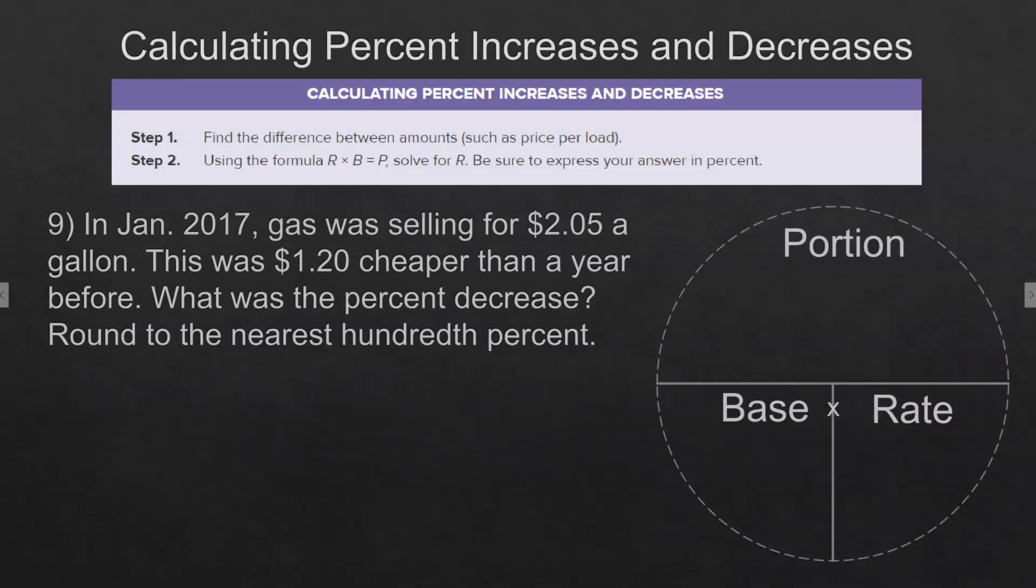Percents of increases and decreases. It's basically like this. You're going to find the difference and we're going to actually use our portion formula here. You're going to find the difference between the original and the cost of the items and then divide that by the original number.